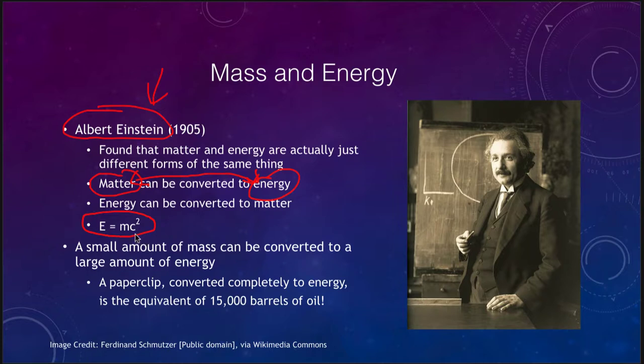If we take a very small amount of mass and multiply that small number by a very big number squared, that gives us a very big change in the amount of energy. A very small amount of mass can be converted into a very large amount of energy. If we take an example of just a paperclip and could convert it completely to energy, that would be the equivalent of 15,000 barrels of oil.